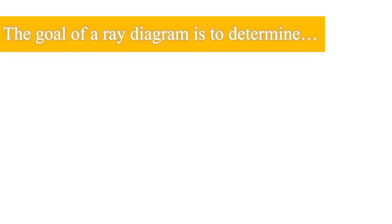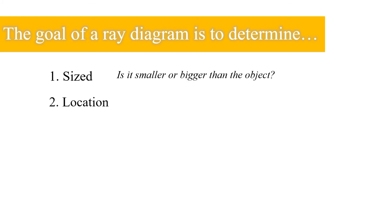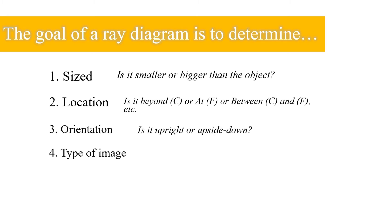The goal of a ray diagram is to determine: first, size — is the image smaller or bigger than the object? Second, location — is it beyond C, at F, between C and F, etc.? Third, orientation — is it upright or upside down? And fourth, type of image — is it real or virtual?